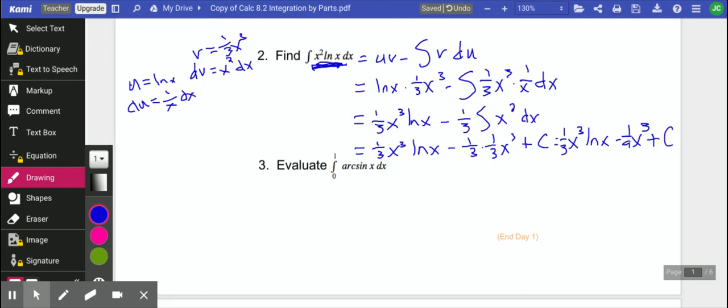1 third x cubed natural log of x minus 1 ninth x cubed plus c. And that looks like a great answer. I think I'm happy with that. How do you guys feel about it?